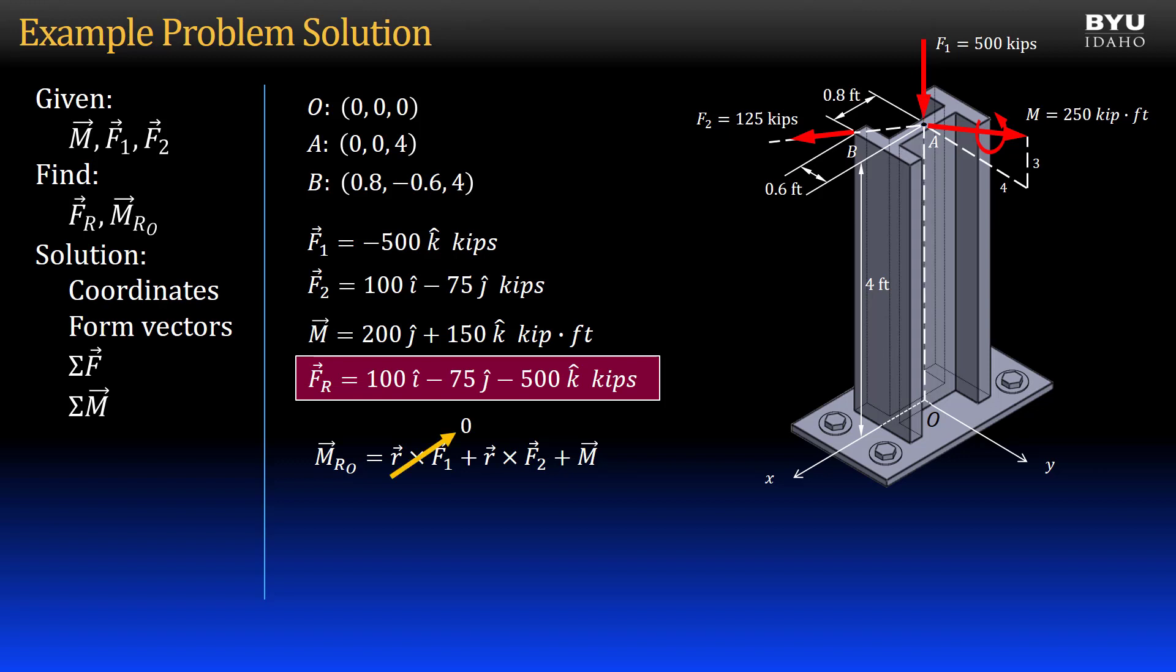Force F2, however, does contribute a moment. We have two readily available options for our position vector. One from O to A, and one from O to B. Position vector ROA is simpler, so I will use it. ROA cross F2 gives a moment vector of 300i plus 400j kip feet.